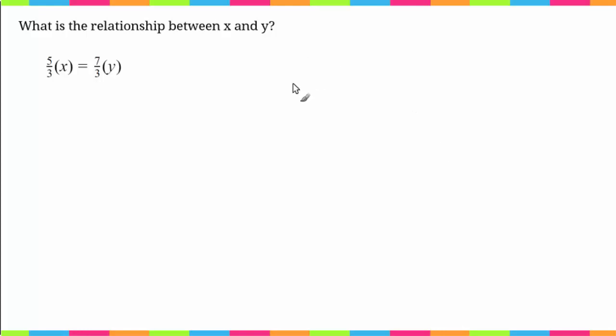Okay, let's go ahead and jump on in. So the first thing I notice when looking at this problem is that these denominators, these threes, aren't going to matter. They're going to cancel out, so my first step in this problem would be to write this as 5x equals 7y and then go from there.